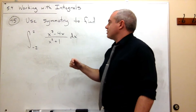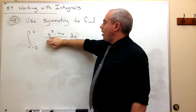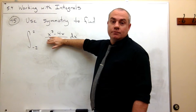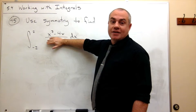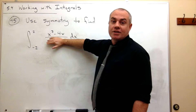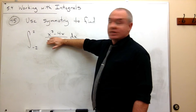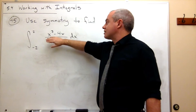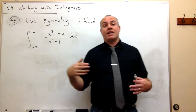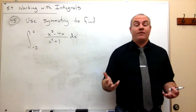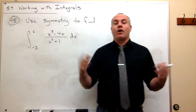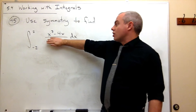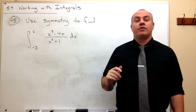Let's think about this for a second. What if the bottom were not there at all, and we just had x cubed minus 4x? Well, if we just had x cubed minus 4x, we'd say this is an odd function. So the answer would be zero.